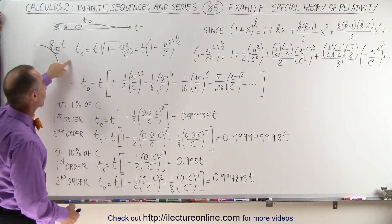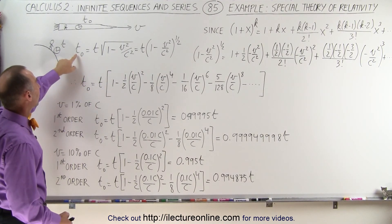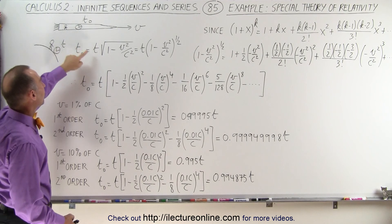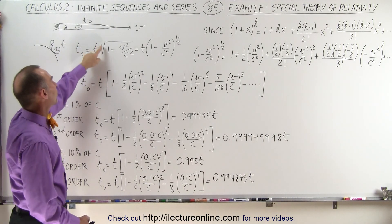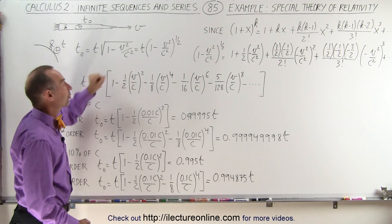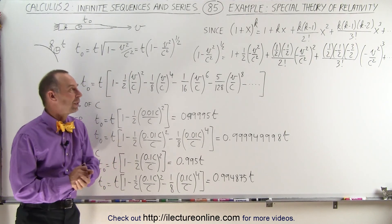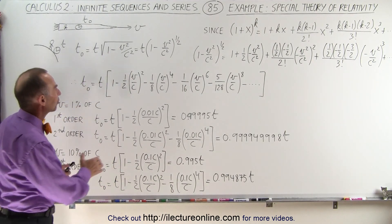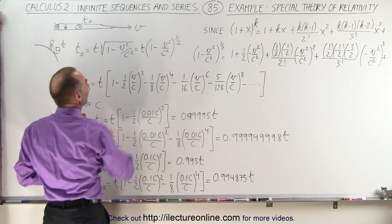The difference can be expressed in this equation right here, where the time measured on spacecraft will be equal to the time measured of the earth times the square root of 1 minus v squared over c squared, where c is the speed of light. And so we can express it in this particular fashion.